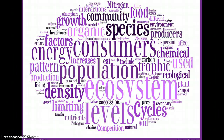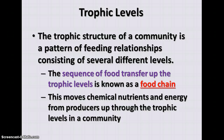This is your second set of notes on ecology. This one is going to focus on energy and matter flowing through the ecosystem from one level to the next. The main term is trophic — trophic levels are the feeding levels. This is where we talk about food chains and food webs in the ecosystem. The structure is based on feeding relationships, and a food chain describes the transfer or sequence of food from the producer level up through each level, moving chemical nutrients and energy all the way up through the different feeding levels in the community.